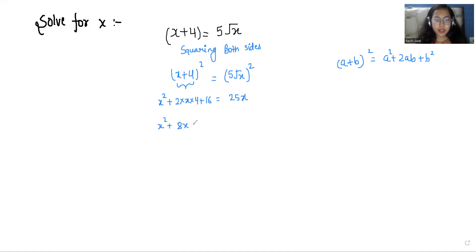So x² + 8x + 16, we'll take 25x to this side minus 25x equals 0. So x² + 16 - 17x equals 0. So I will write it in proper order.